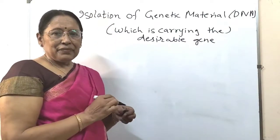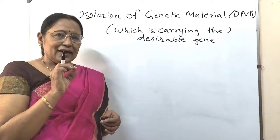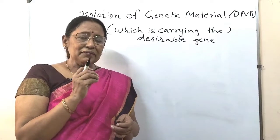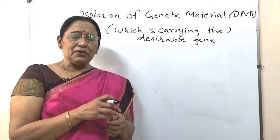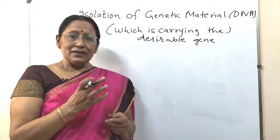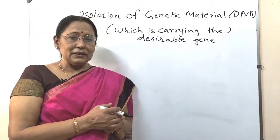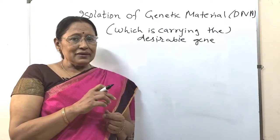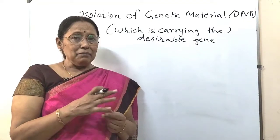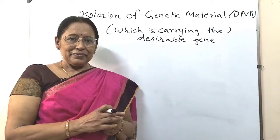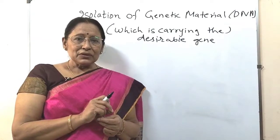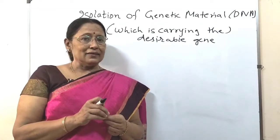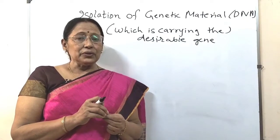If we find that in any fungus, bacterial cell, or plant cell — any cell — there is some gene which can be of great importance for industry, for agriculture, or for medicinal purposes, then we need to take that gene out and use it further to amplify it. But before that, since the gene is present in the DNA, we need to take out the DNA. The first step in getting the desirable gene is to get the DNA.